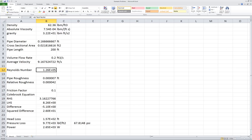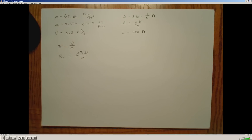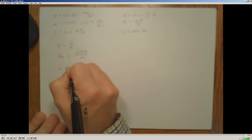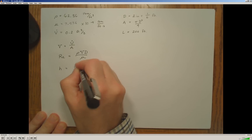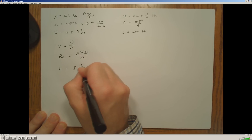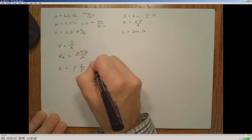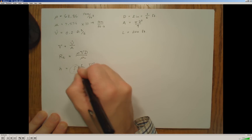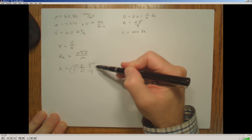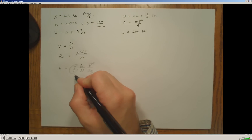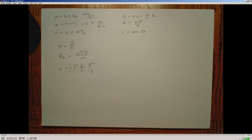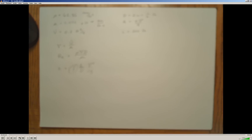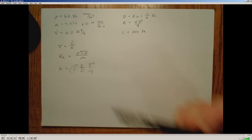Now that we know the flow is turbulent at the given volumetric flow rate, I need to calculate the head loss. The head loss is given by the Darcy equation: the friction factor multiplied by the length of the pipe divided by the diameter, multiplied by the squared average velocity, divided by 2 times gravity. Since I know the length, diameter, and average velocity, I need to determine the friction factor, which I can find using the Moody chart based on the Reynolds number and surface roughness.